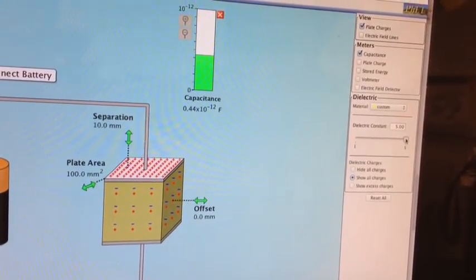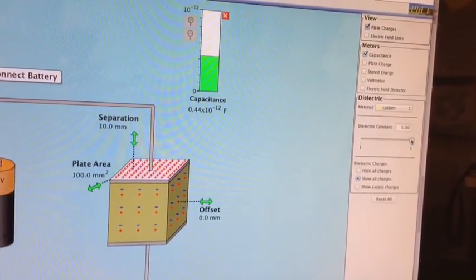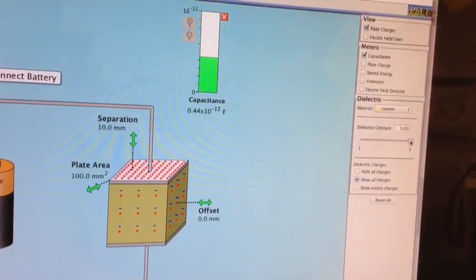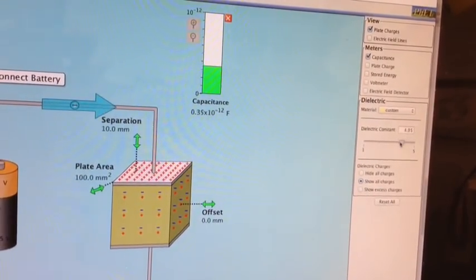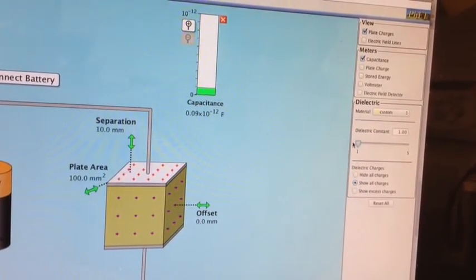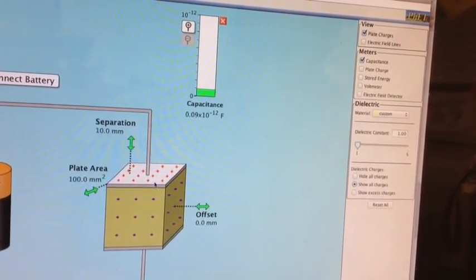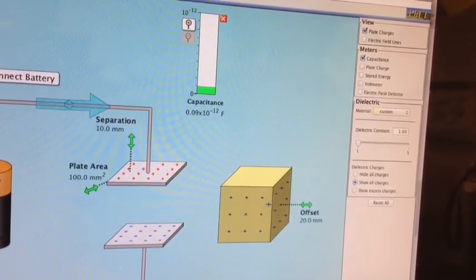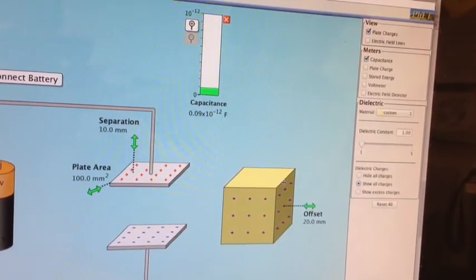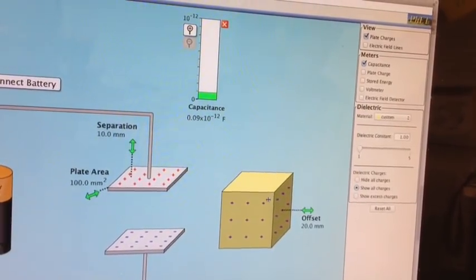So the larger dielectric constant, which is an indication of the polarity of your material, the better the capacitor. If your material is not polar at all, then the charges don't separate, and you may as well not have anything in there. It's going to be the same charge as if you had air.